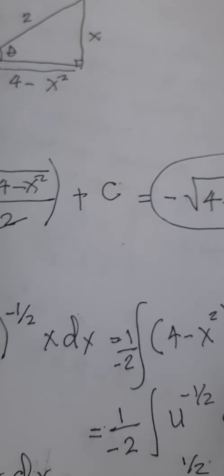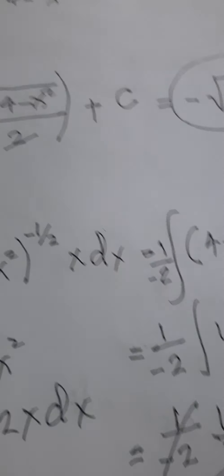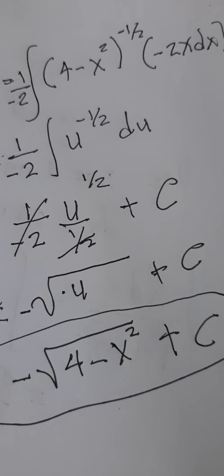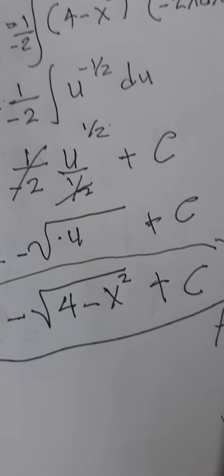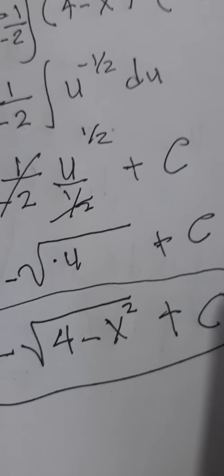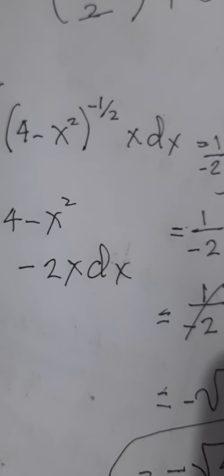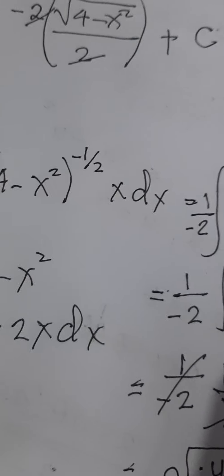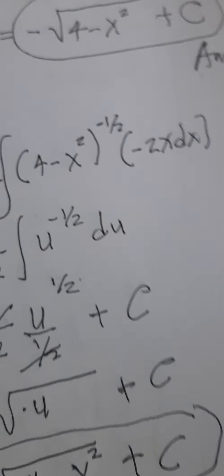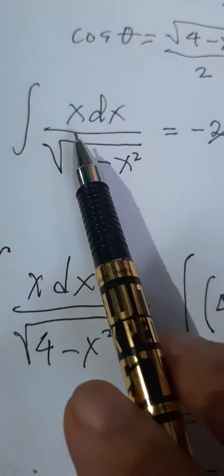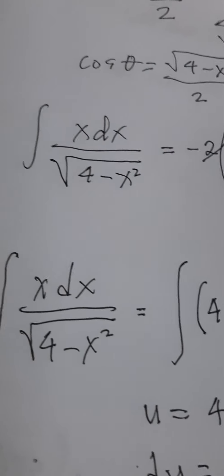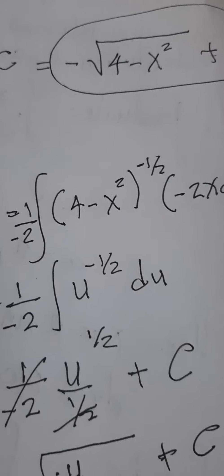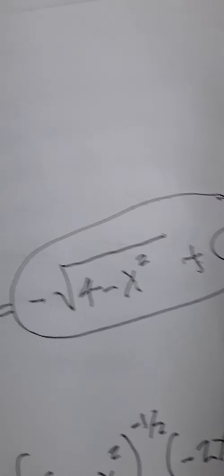Trigonometric substitution is more applicable when you can no longer find another solution for the given integrand. If it can be solved using other methods aside from trigonometric substitution, prefer those simpler methods — like this example, which can be solved using integration by substitution with the power formula. However, if there is no X factor in the integrand, we cannot solve it using a simple power formula, so trigonometric substitution becomes necessary.